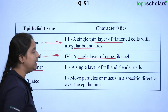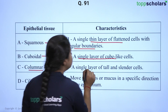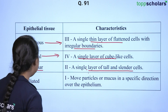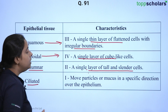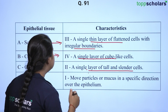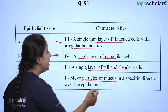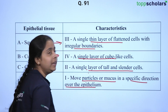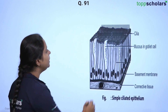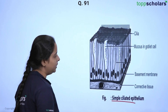Columnar epithelium, as the name suggests, is like columns — a single layer of tall and slender cells. Ciliated epithelium has ciliated or hair-like structures on top, and these are involved in moving particles or mucus in a specific direction over the epithelium. You can see these are the cilia — the ciliated simple epithelium.